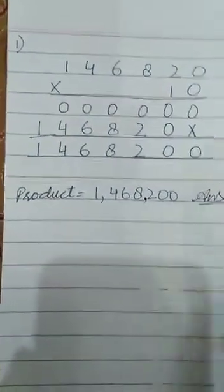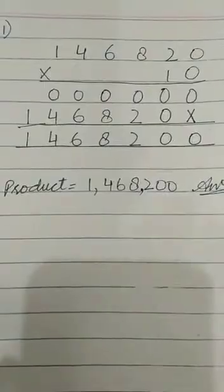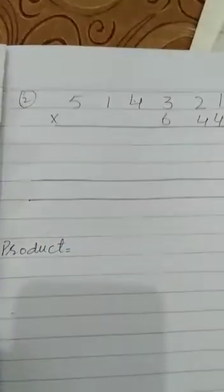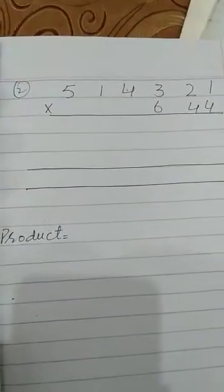Our answer is one million four hundred sixty-eight thousand and two hundred. Put the commas after three numbers — that is your answer. Now we have an example of a six-digit multiplication with a three-digit number.